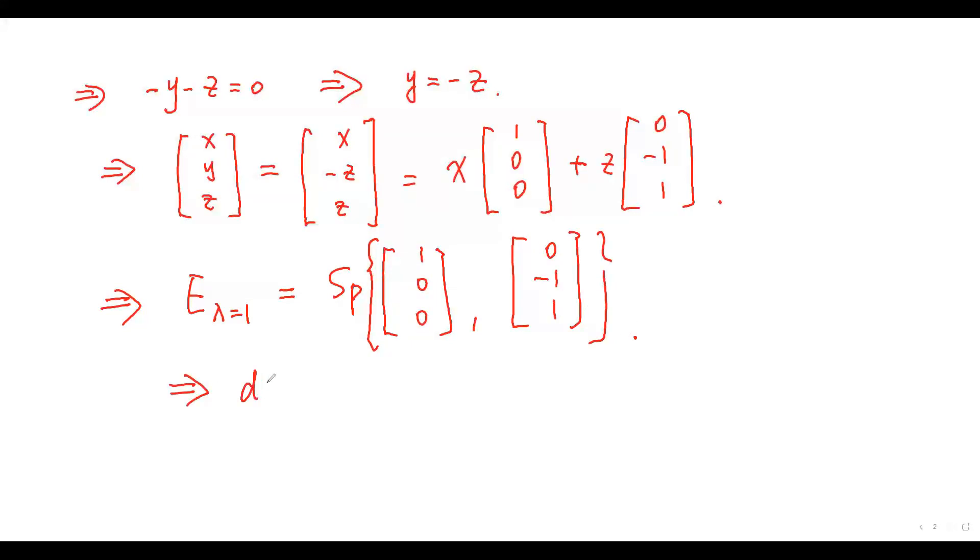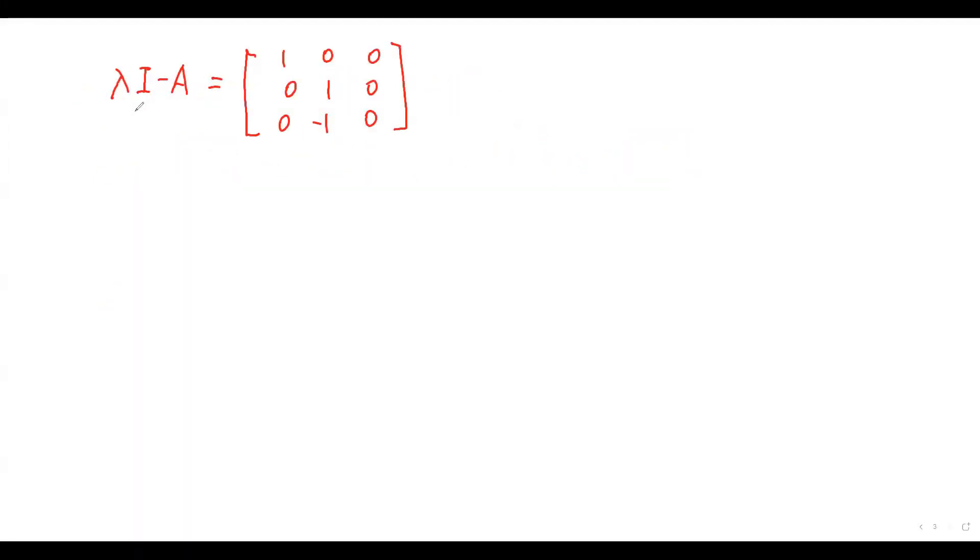So, the eigenspace for eigenvalue equals 1 equals the space generated by these two vectors. This gives the dimension of the eigenspace equals 2. Now, consider the eigenvalue equals 2 with multiplicity 1.